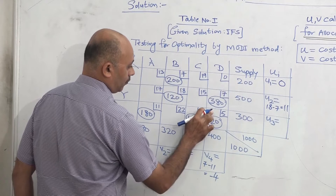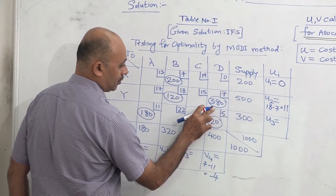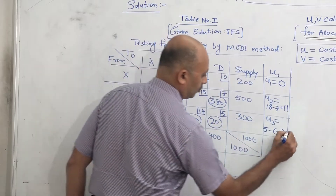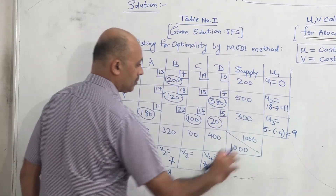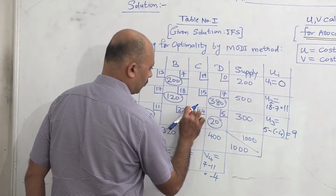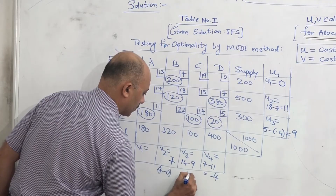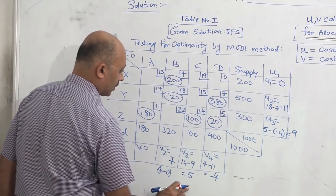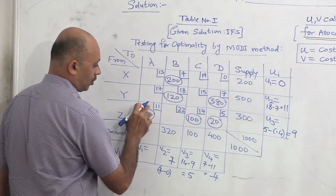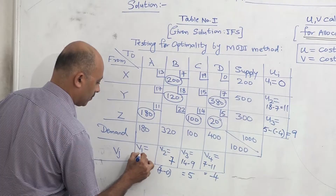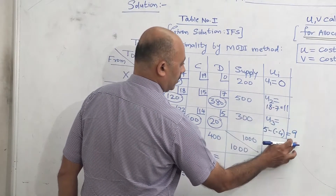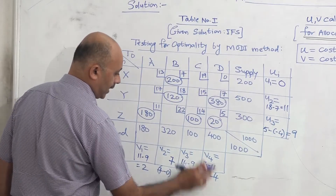Now from U3, you will get V3. Allocation is 100, cost is 40. 40 minus 9 gives V3 equal to 5. Wait — cost 40 minus U3 which is 9 gives... then one more value remaining is V1. From the allocation of 180 with cost 11: V is cost minus U, so 11 minus 9 gives V1 equal to 2. Now you have all U and V values: U1=0, U2=11, U3=9, and V1=2, V2=7, V3=5, V4=minus 4.